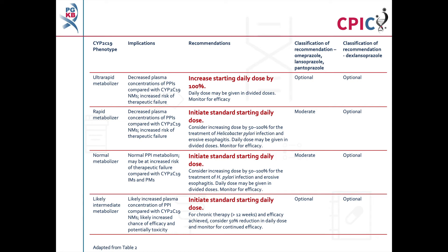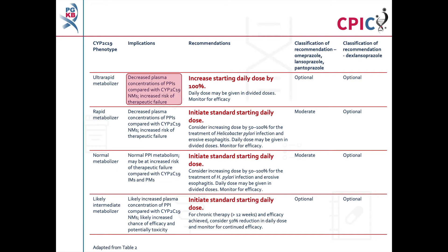These are the CPIC dosing recommendations for dexlansoprazole, lansoprazole, omeprazole, and pantoprazole, as shown in table 2 of the guideline. Patients with a CYP2C19 ultra-rapid metabolizer phenotype will have decreased concentrations of PPIs and are at an increased risk of therapeutic failure. These patients should be given a 100% increase in the starting dose. This is an optional recommendation for all four PPIs.